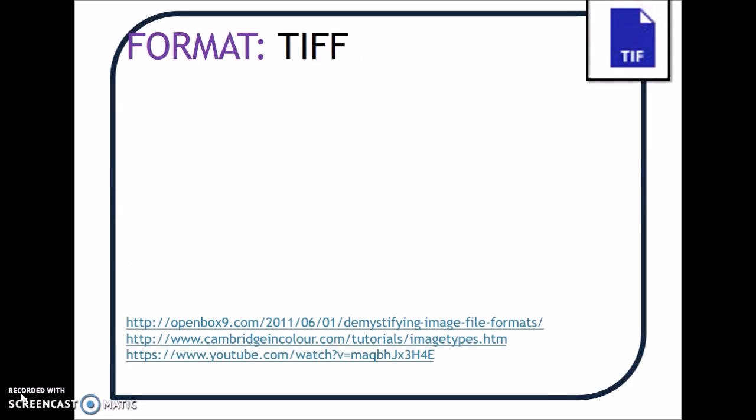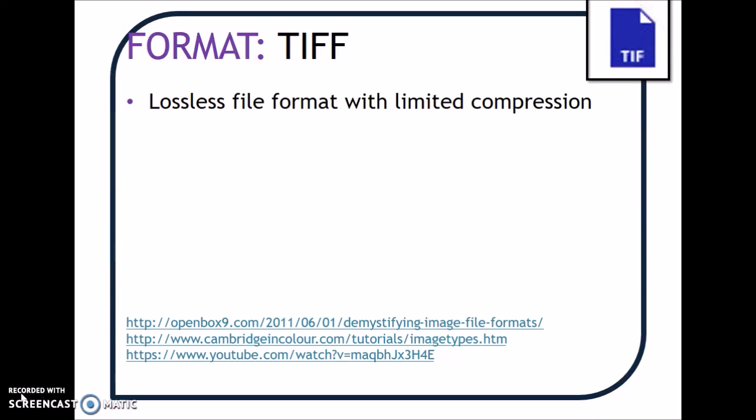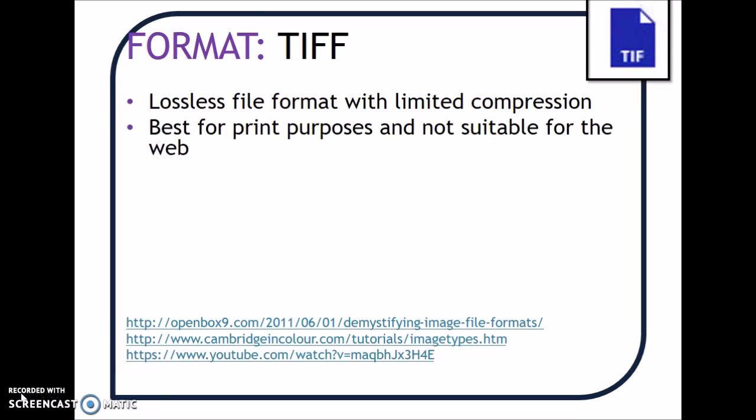The next one is a TIFF file format. It's a lossless file format with limited compression. Sometimes it's not compressed at all and it can contain layers. In Photoshop you can often save it as a TIFF file without layers, which does reduce the file size because they are big files. It's best for print purposes. You absolutely can't use it on the web — it's a massive file format by comparison to something like a JPEG, and that means when you're downloading it's going to take forever, especially with a poor broadband connection or on a mobile phone.